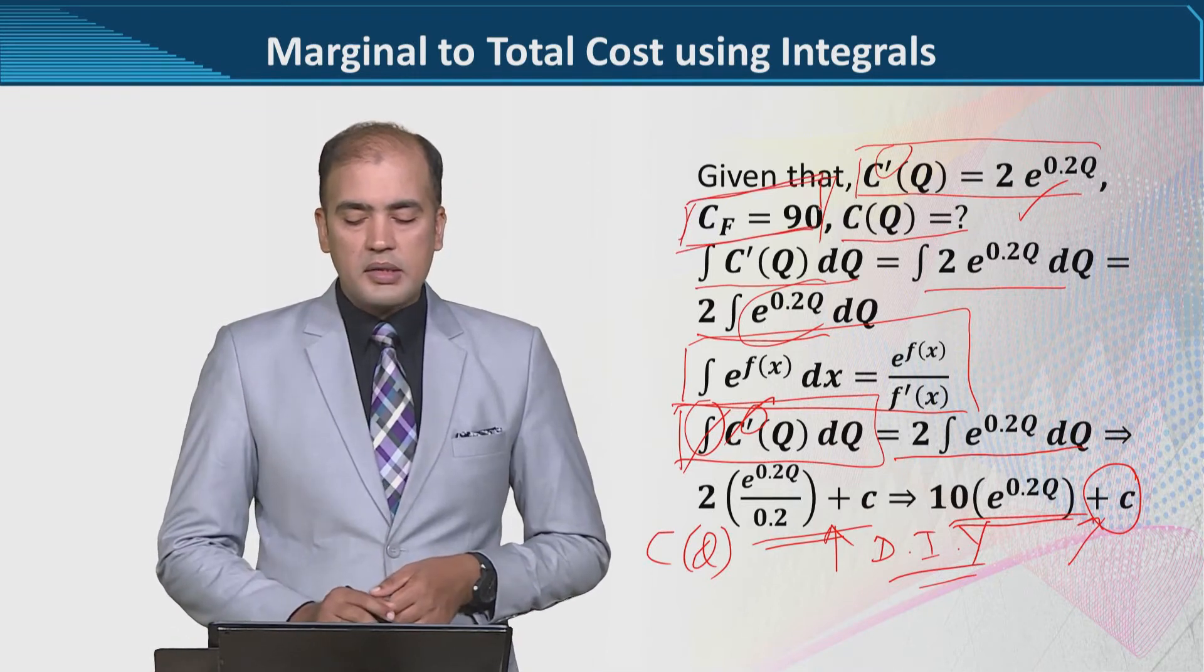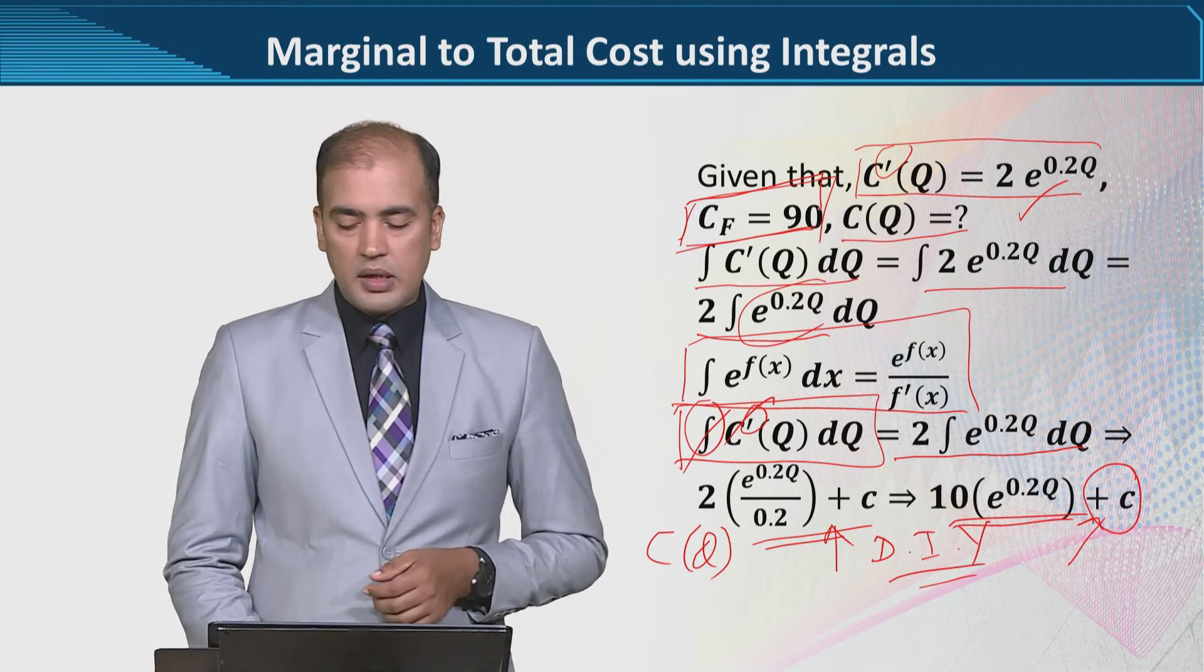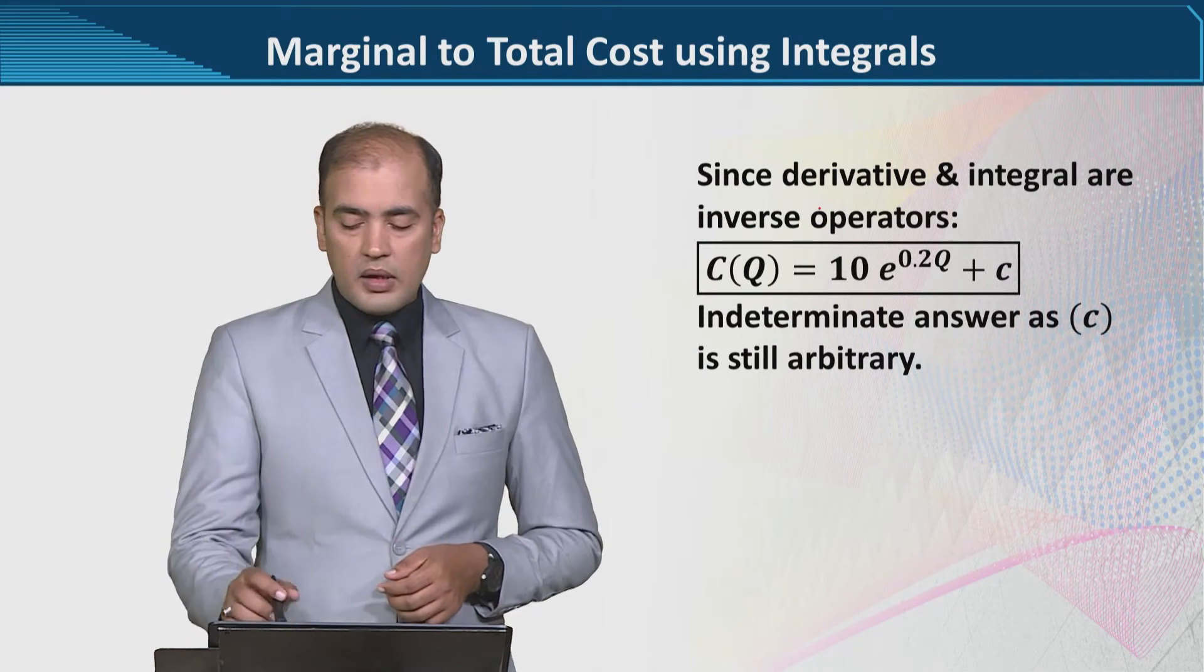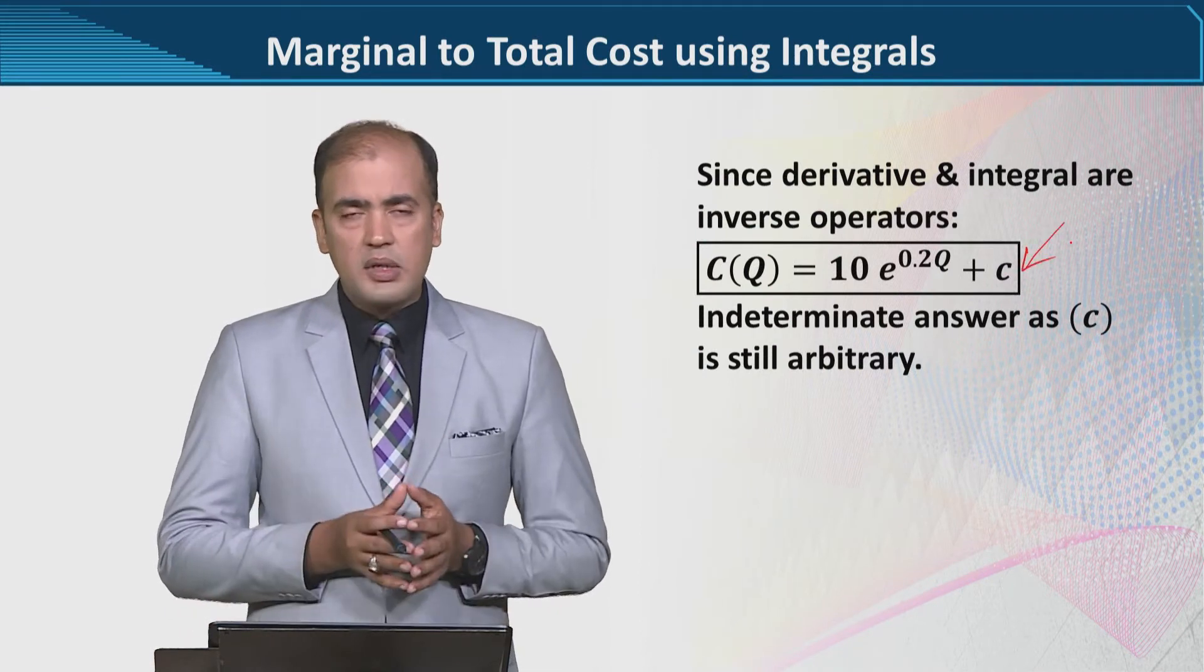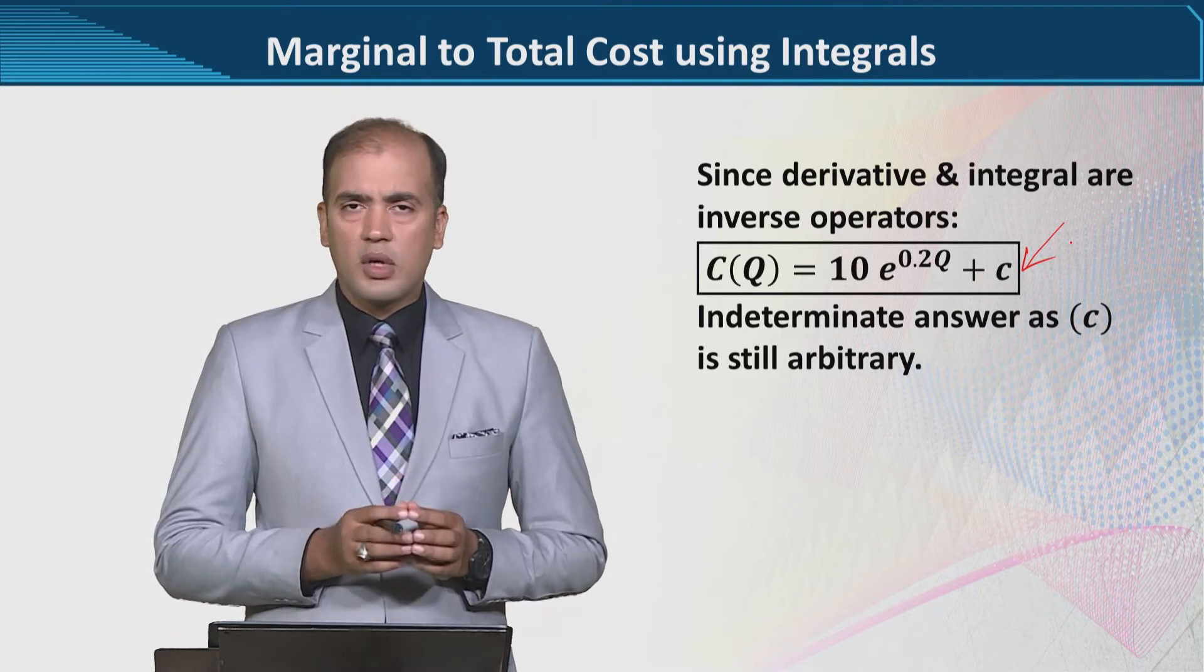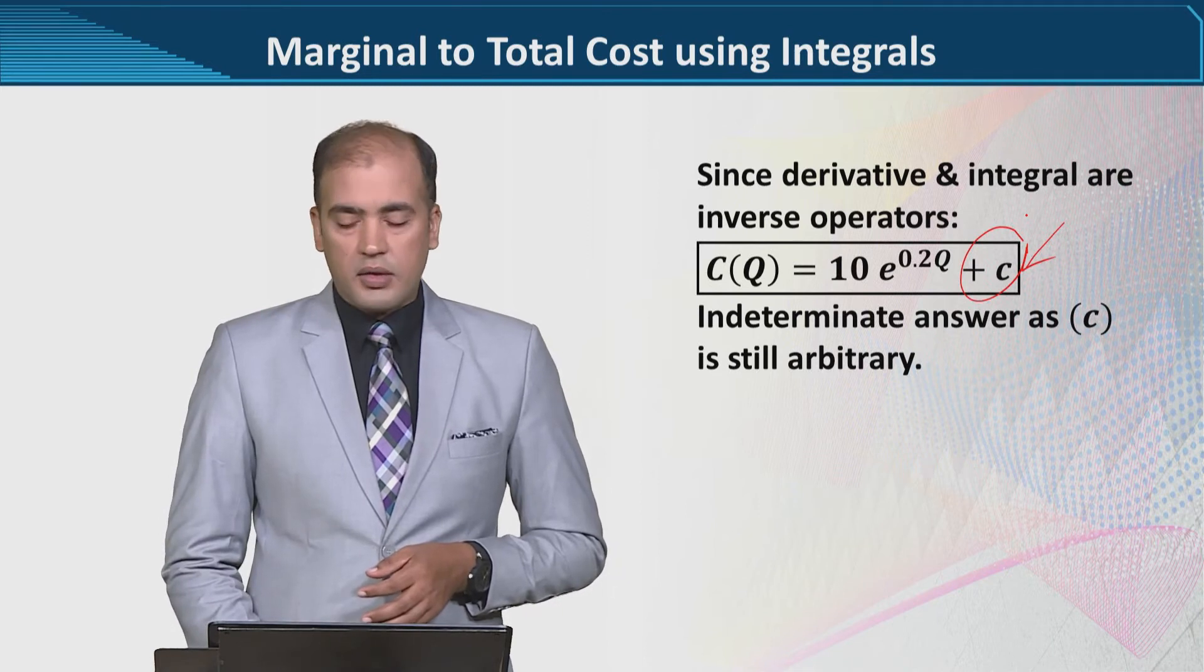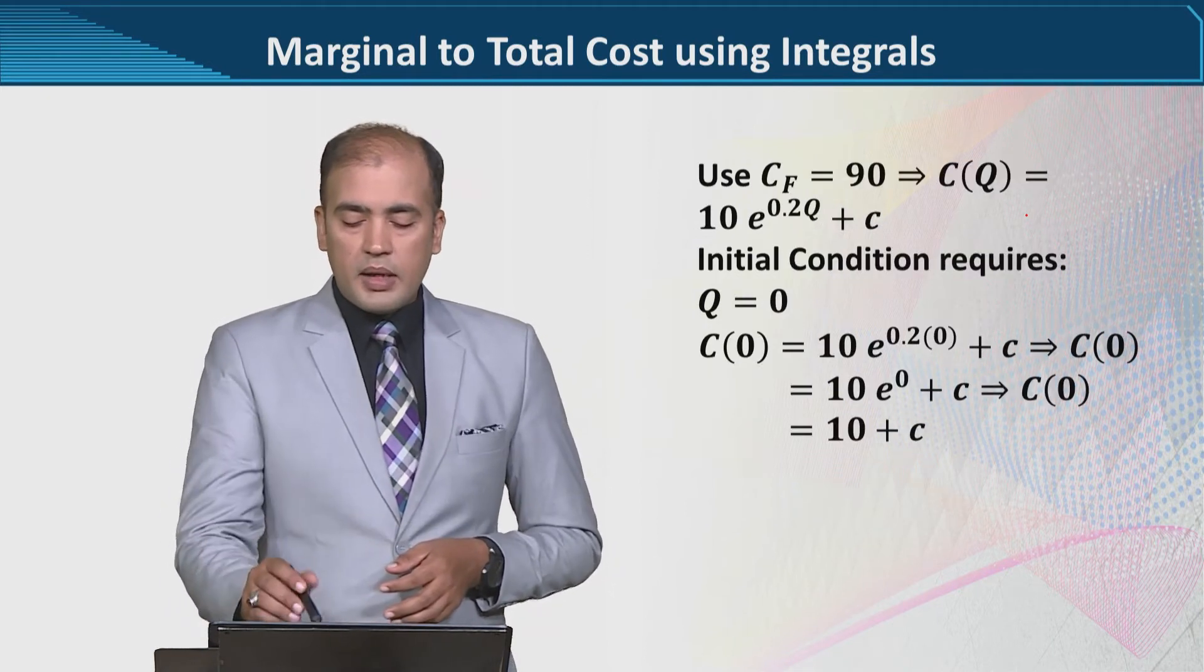You will see that CF, that is the fixed cost, is given. We can use this, let us see how. And just to put in more exact words, this is the general solution of the total cost function, because of this arbitrary constant. Now, as we have talked about earlier, this is the fixed cost.